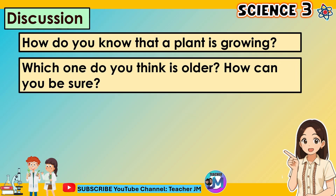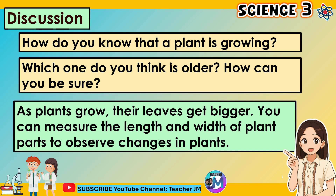How do you know that a plant is growing? Which one do you think is older? How can you be sure? As plants grow, their leaves get bigger. You can measure the length and width of plant parts to observe changes in plants.